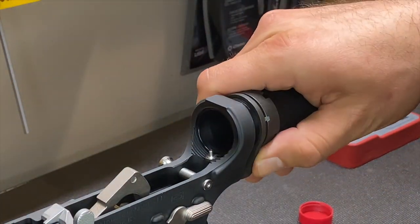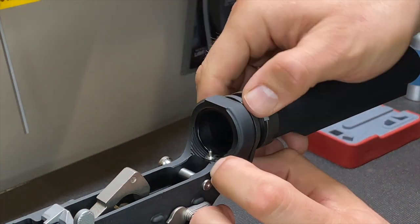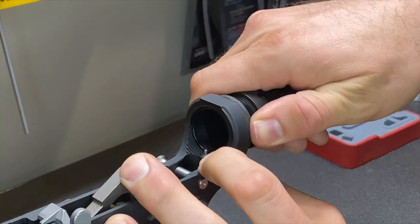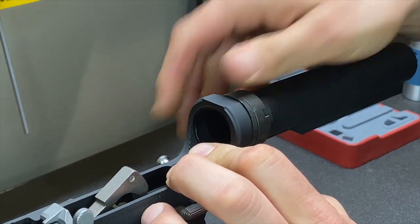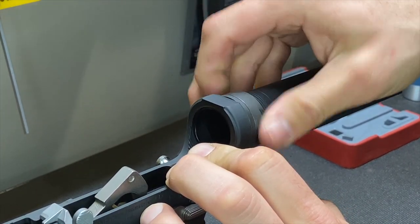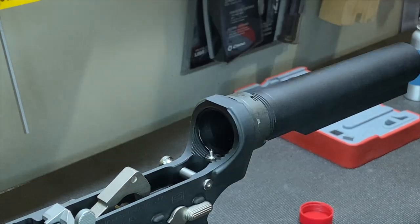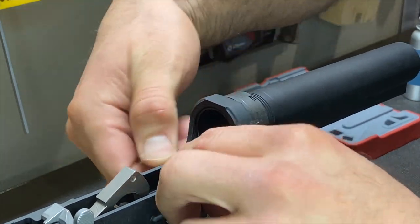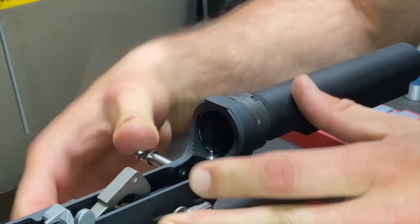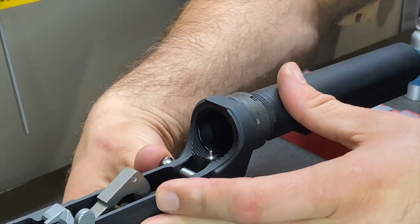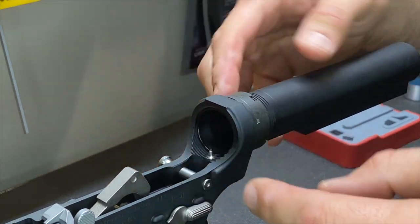We're going to slide up our end plate right up against the receiver. We're going to tighten our castle nut up there. Now before we start making things permanent, we're just going to check real quick. Our takedown pin is caught, that detent system is working good.